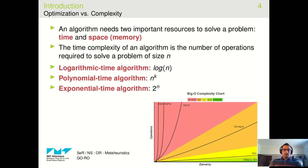Let's remind you about the concept of complexity in algorithms. To solve a problem, any algorithm needs two important and limited resources: time and space, or memory. With big advancements in designing supercomputers, memory is no longer a limitation, but time is still a big limitation in designing optimization algorithms. The time complexity of an algorithm is the number of operations required to solve a problem of size n. Algorithms can be designed with different types of complexity — for example, if an algorithm has logarithmic time complexity it takes log(n) units of time, or if it has exponential complexity, 2^n units of time are needed to solve the problem of size n.